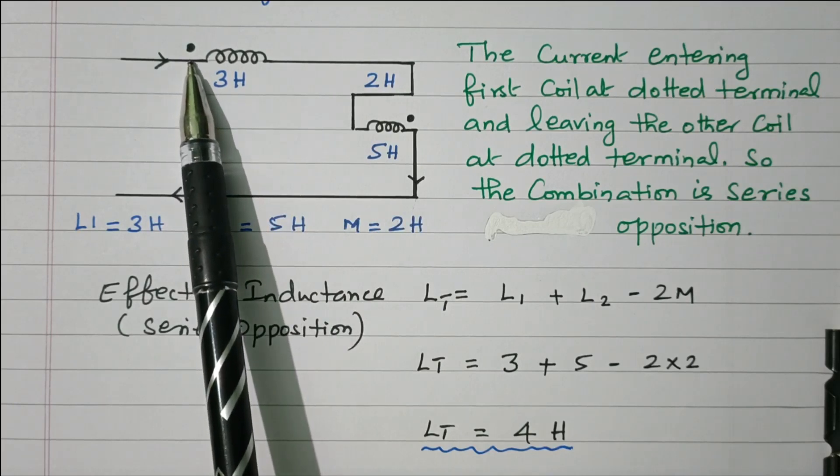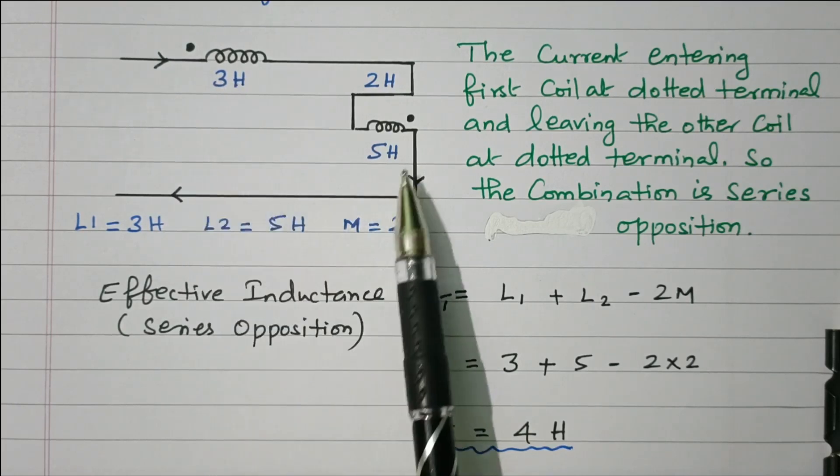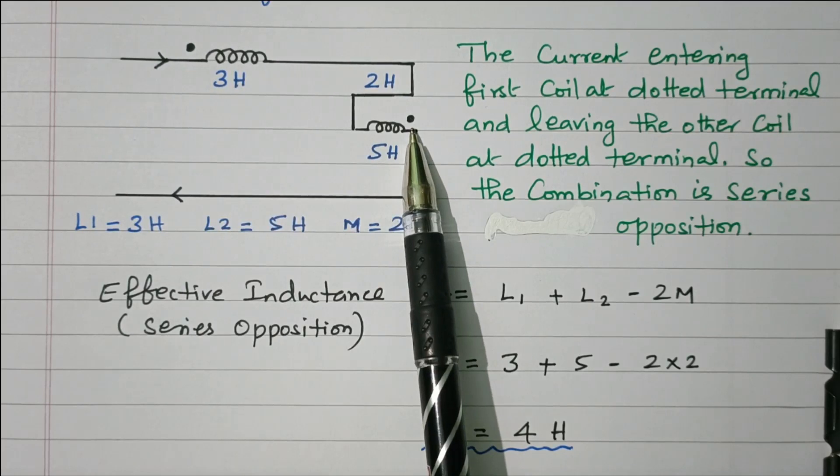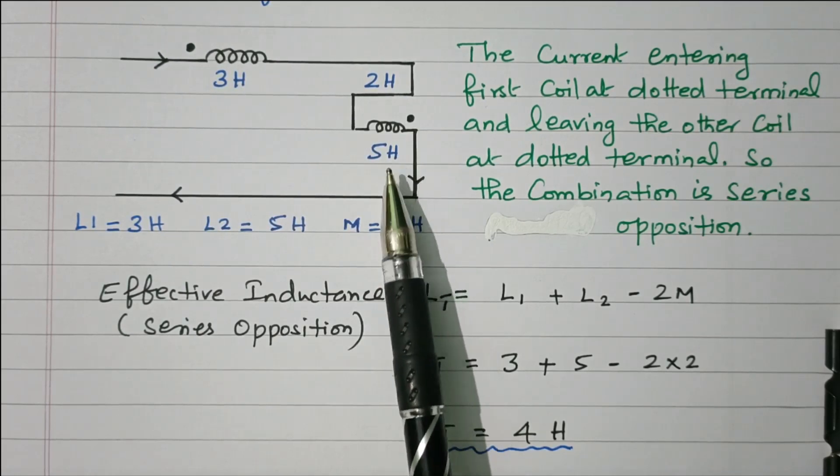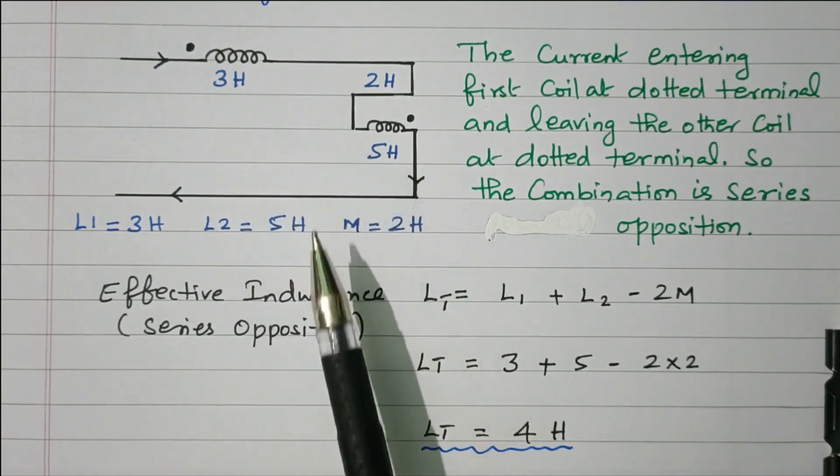Here, current enters at the dotted end in coil 1 and leaves at the dotted end in coil 2. So it is series opposition. Based on that, by using the formula, we calculated the effective inductance.